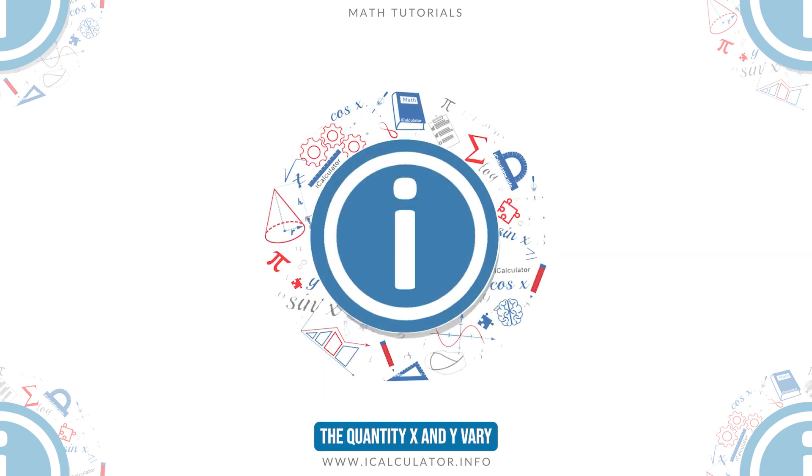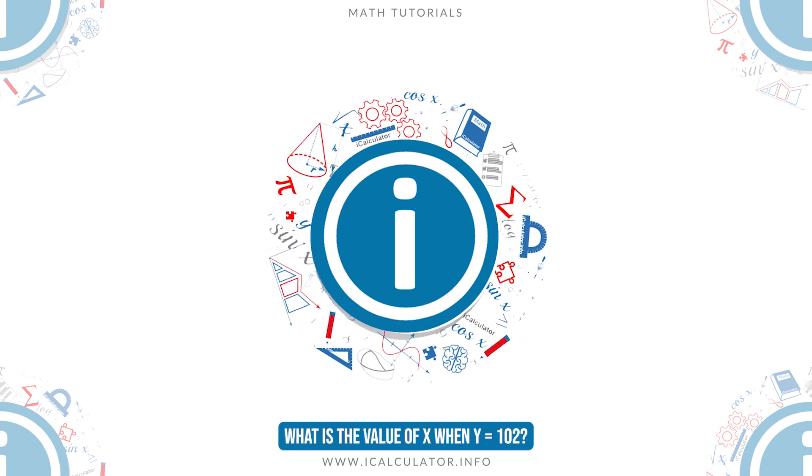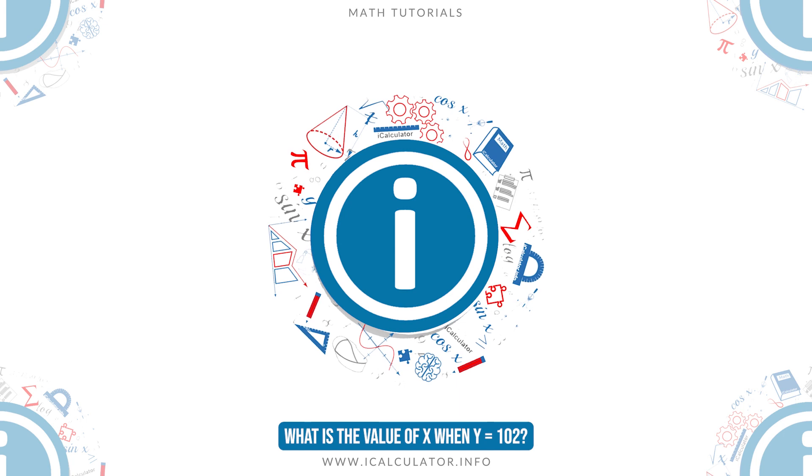Example 2: The quantity X and Y vary directly, and Y equals 6 when X equals 18. What is the value of X when Y equals 102?